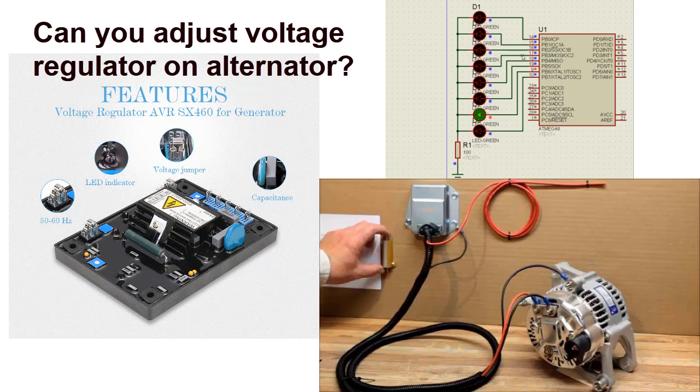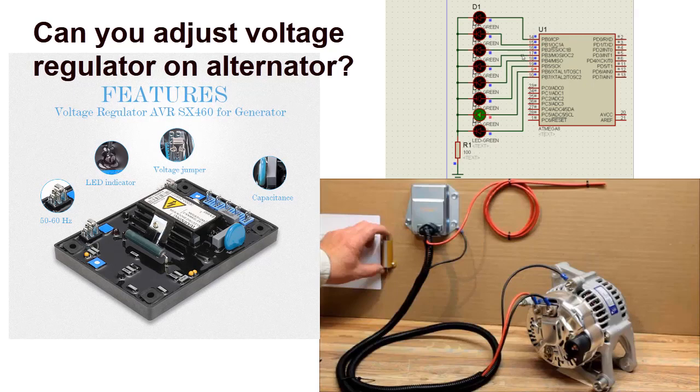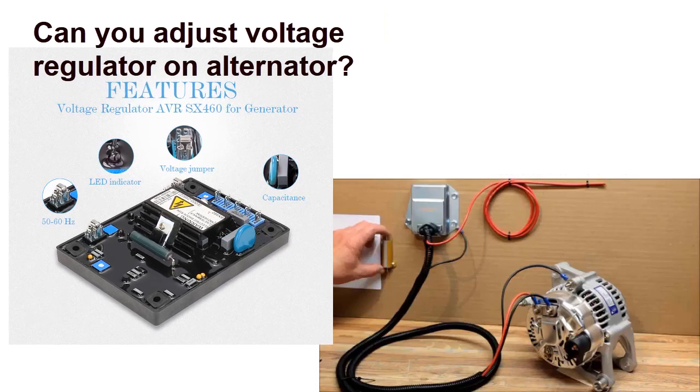An automatic voltage regulator, or AVR, is a device used in generators with the purpose of automatically regulating voltage, which means that it will turn fluctuating voltage levels into constant voltage levels.